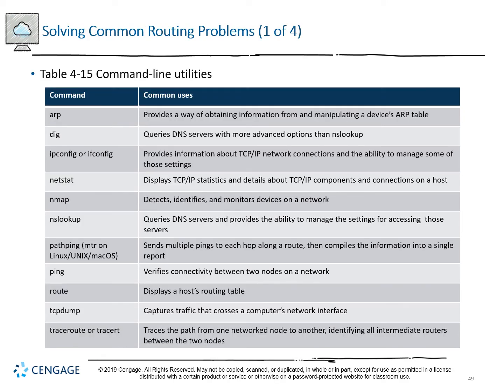Other useful command-line utilities include ARP, dig, IP, ifconfig, netstat, NMAP (use carefully on networks as it may trigger automatic disconnection), nslookup, pathping, MTR for Linux monitoring, ping, route, and tcpdump or traceroute/tracert.